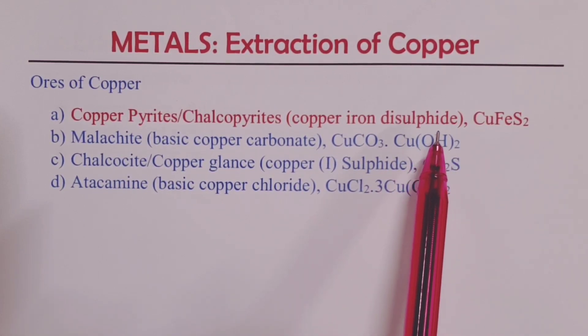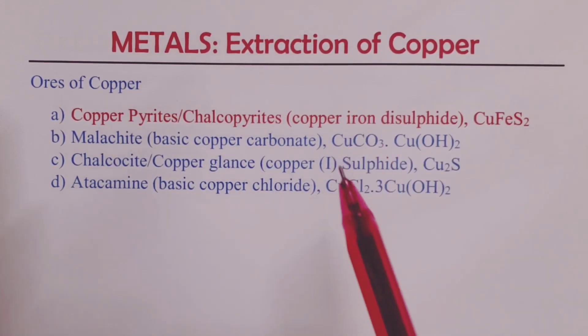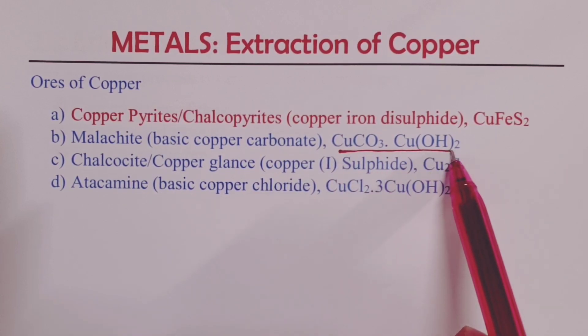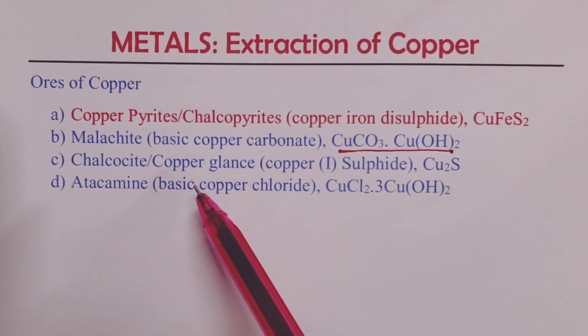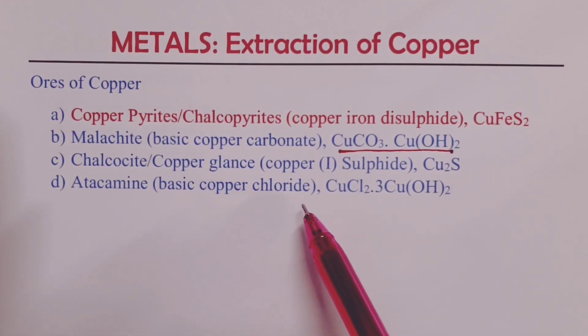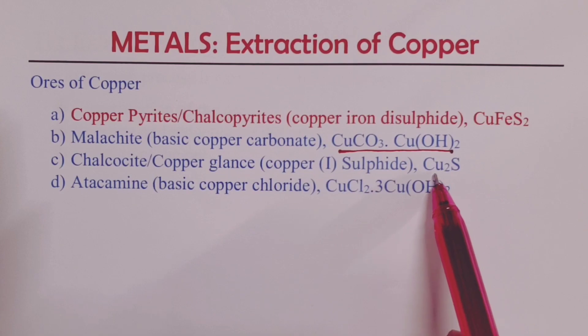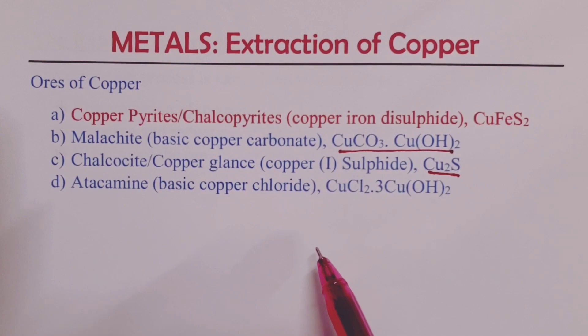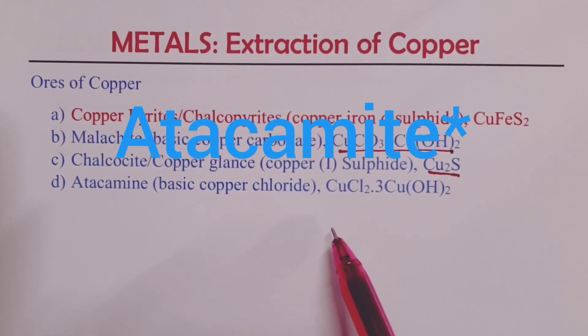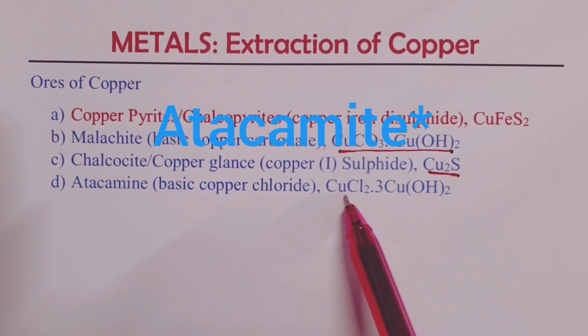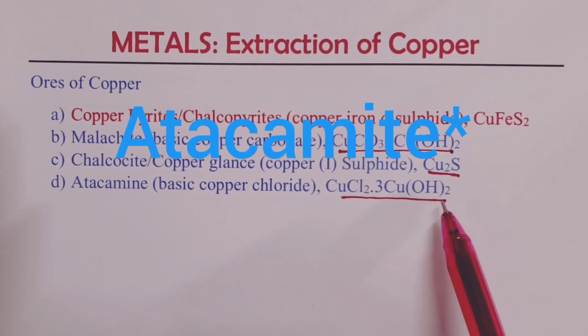Other ores include malachite, which is basic copper carbonate. We also have chalcosite or copper glance, which is copper sulfide. The other ore is atacamite, which is basic copper chloride.